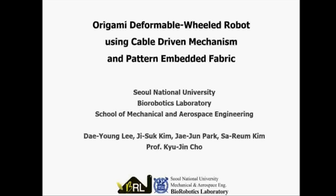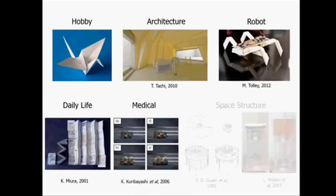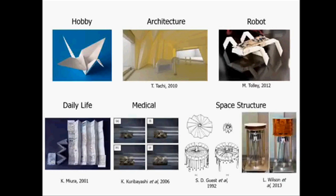This is the video about fabrication of origami wheel using pattern-embedded fabric and its application to a deformable mobile robot. Origami is the art of paper folding. From hobby to space structure, origami has been used in various ways because of its unique characteristics.